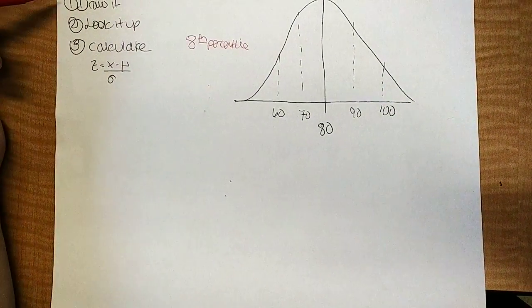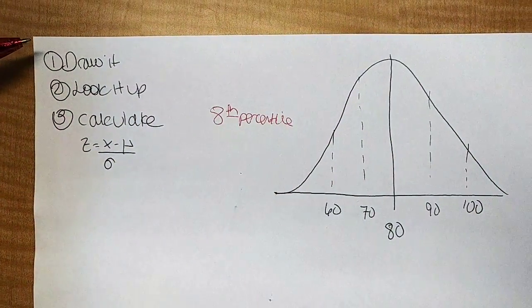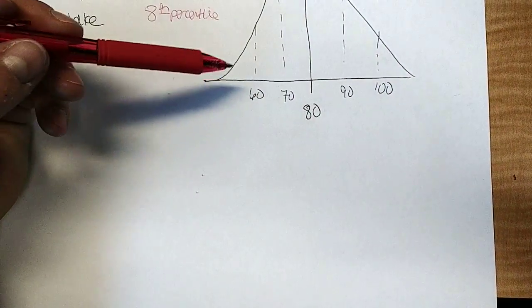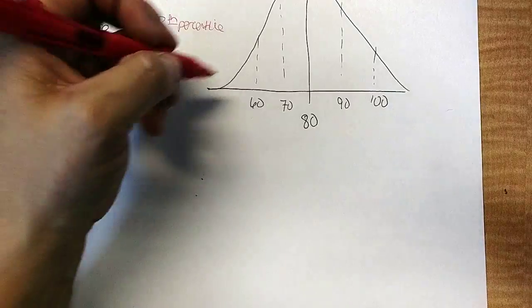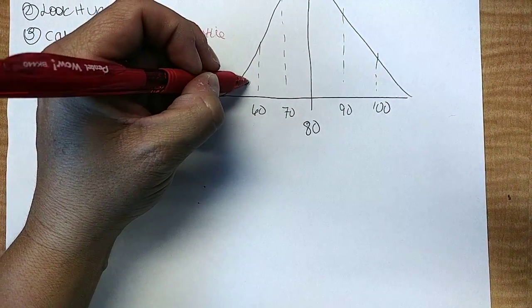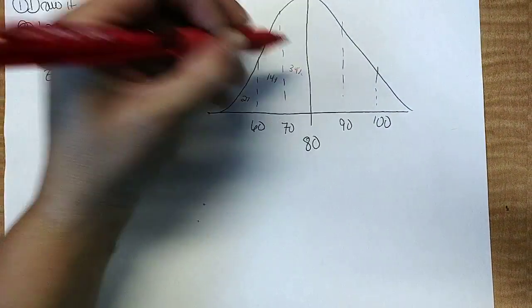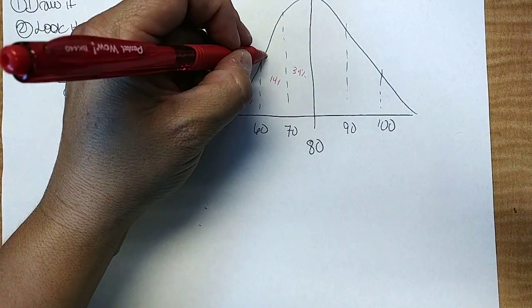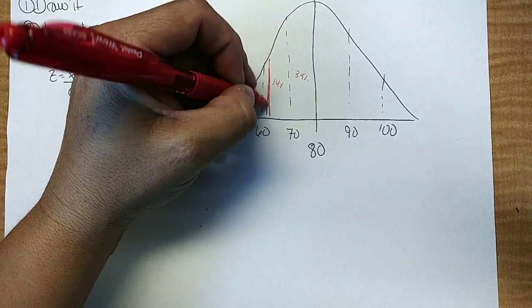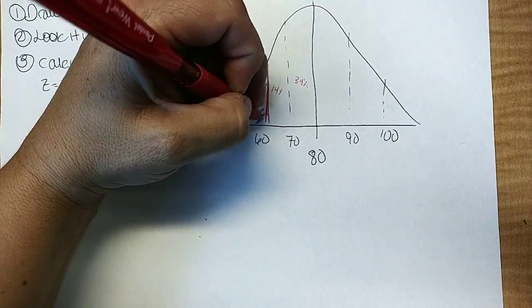So I'm going to go ahead and try and draw it, because that's what my first step says, is draw it. I don't know exactly where 8% would be, but I know that this is 2, this is 14, and this is 34%, so it's got to be somewhere right past the 2%, right? So I'm just best guessing it's going to be in here.